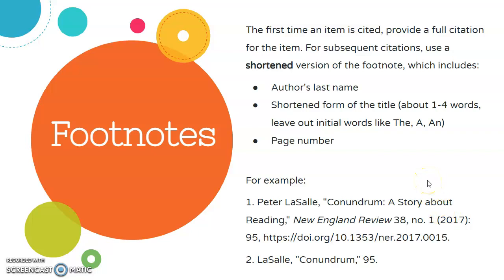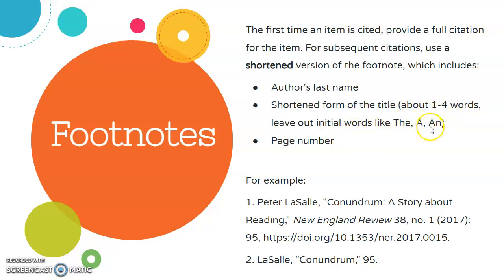But sometimes we find ourselves quoting from the same source more than once. In cases like this, when you have subsequent citations from the same source, you should use a shortened version of the footnote, which only includes the author's last name, a shortened form of the title — sometimes about one to four words, leaving out initial words like the, a, or an — and the page number.